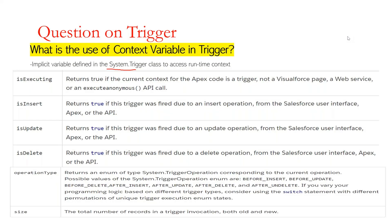When somebody asks what is a context variable and what type of context variables we have used in our trigger, we can say we have many types of context variables to identify the current runtime context of trigger execution — like whether the trigger is executing in before or after operations, or due to what type of operation like insert, update, or delete. Each variable is defined in the trigger class and can be used to control the runtime context. For example, Trigger.isExecuting returns true if the current context of Apex code is a trigger.